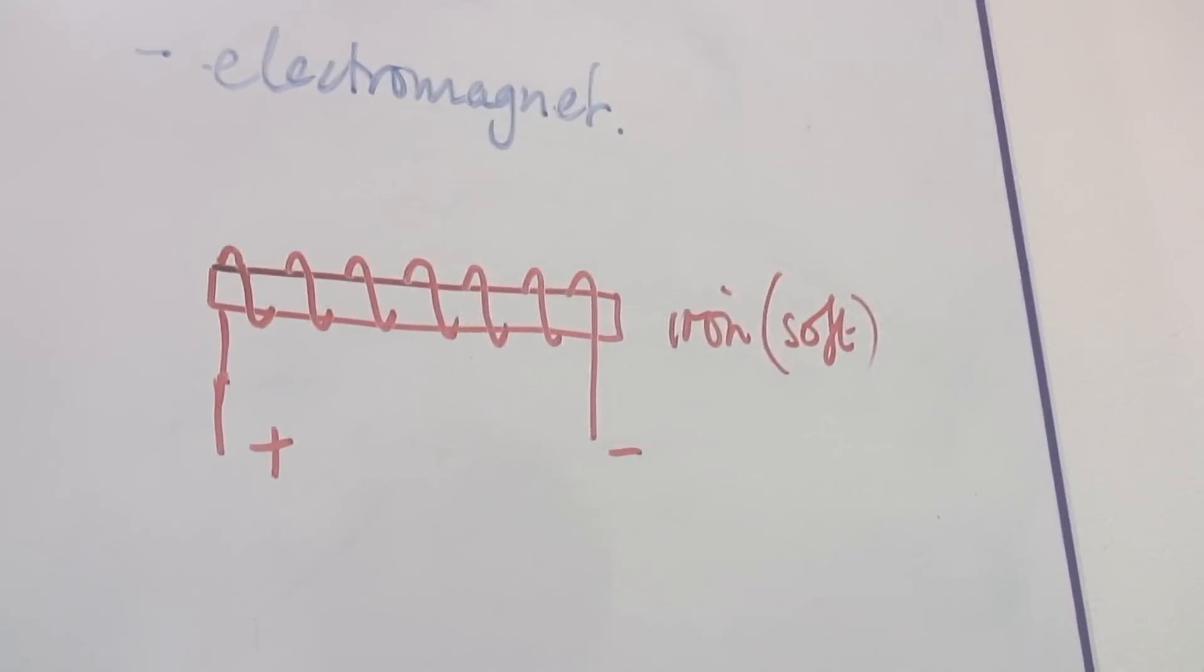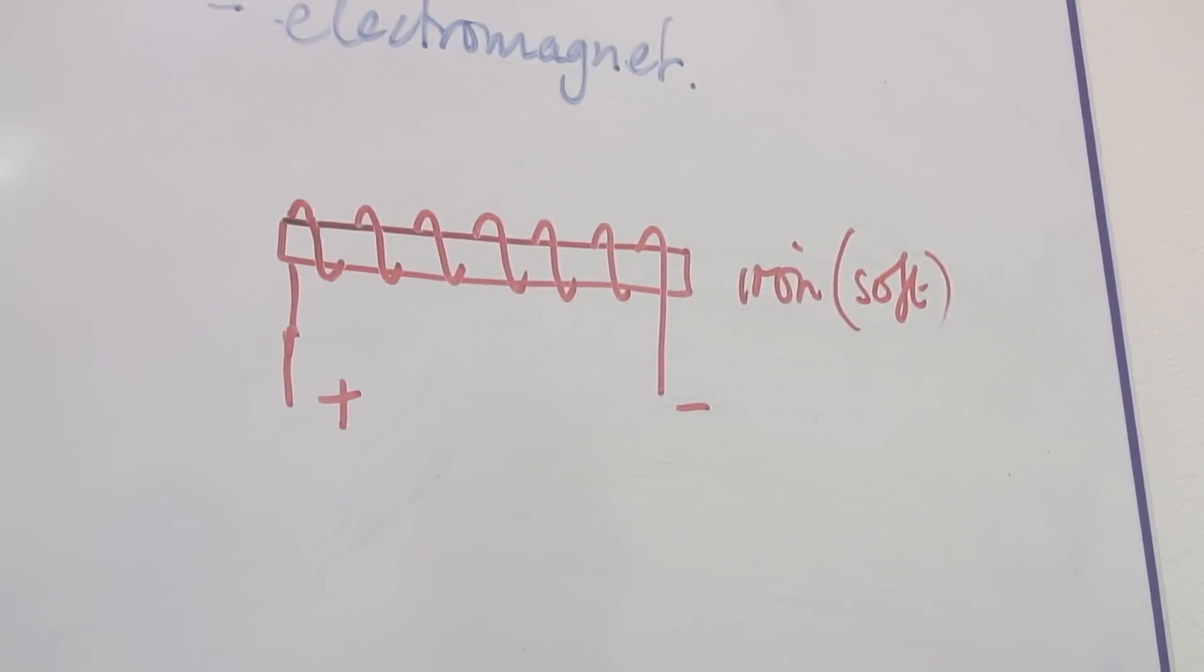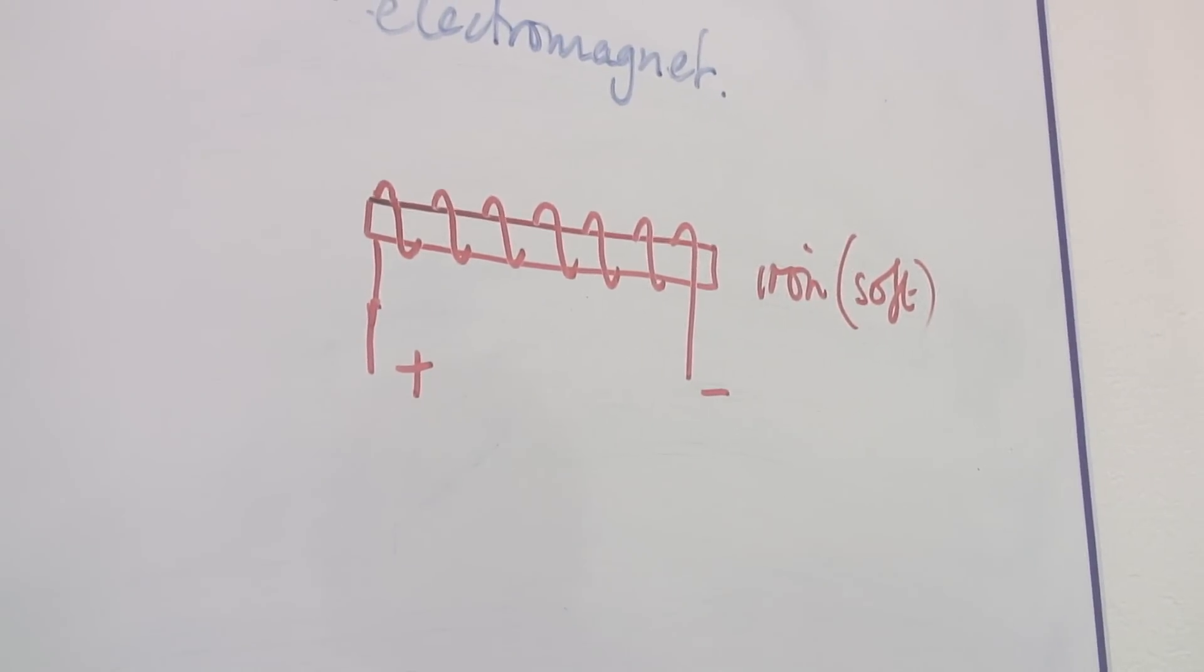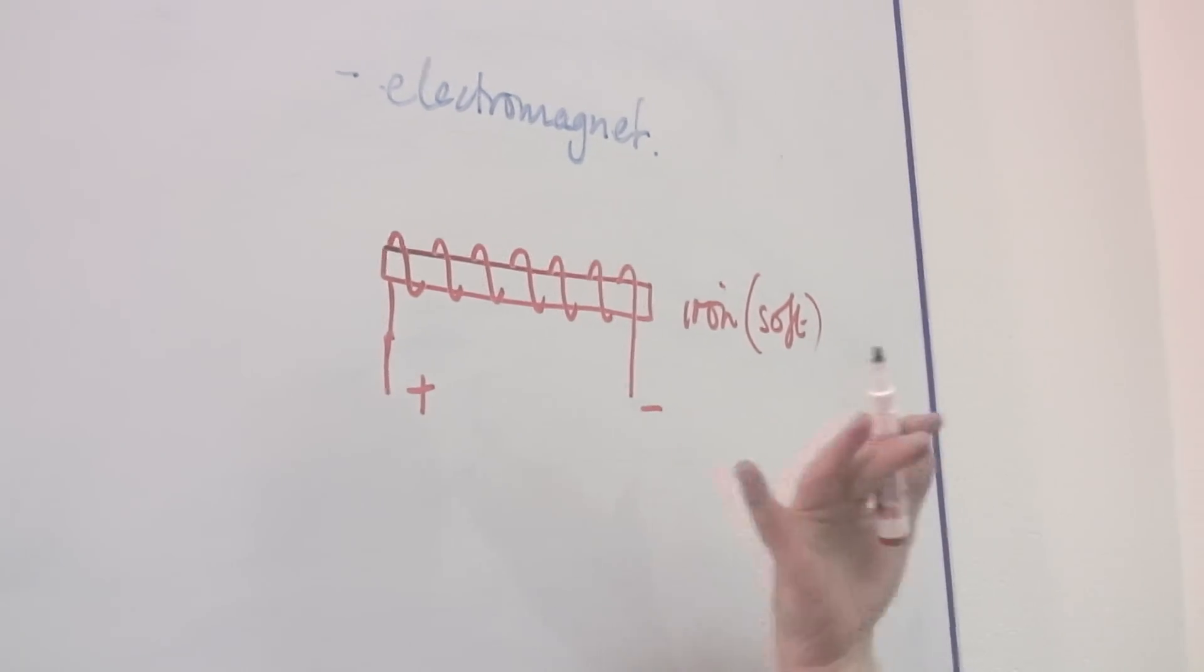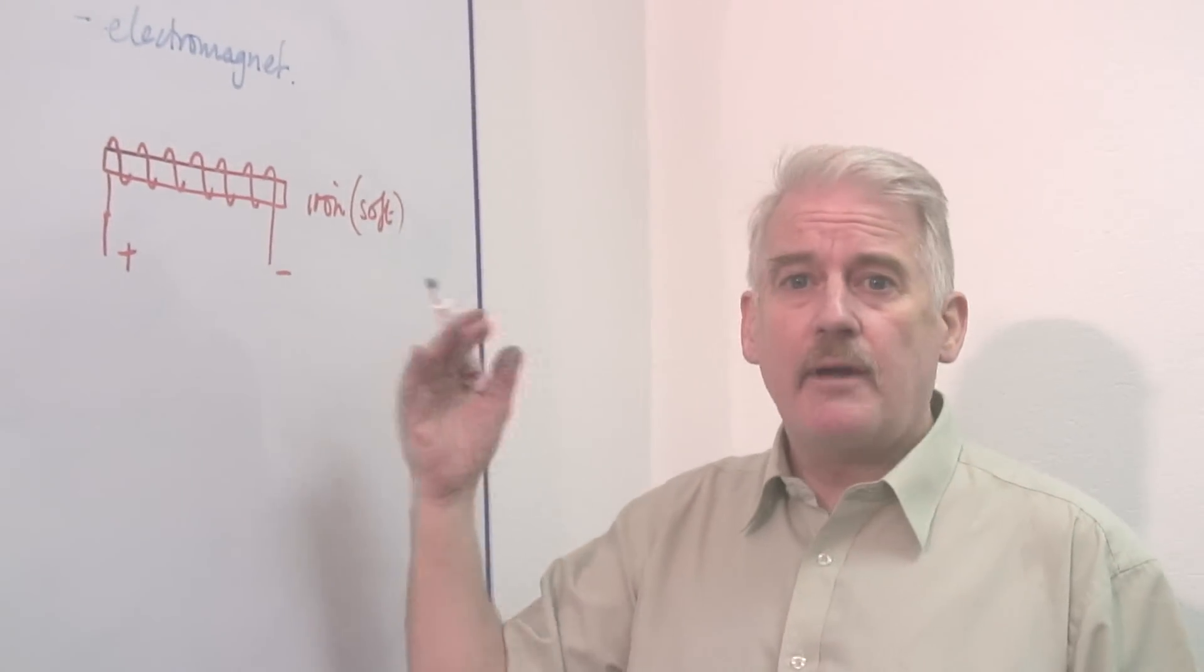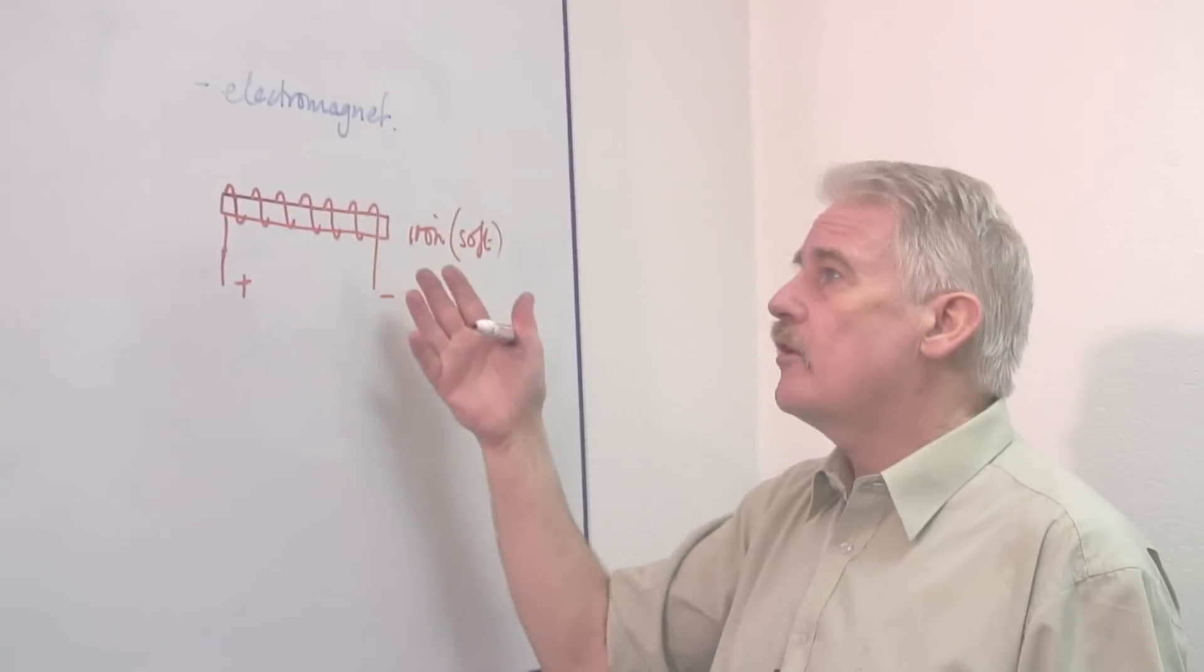Soft meaning it loses its magnetism. So when we switch off the current, this becomes demagnetized, so this is a true temporary magnet. It's not a permanent magnet. It's only magnetic when you've got the current flowing through it.